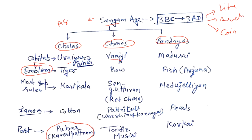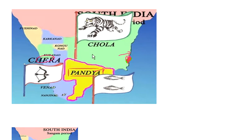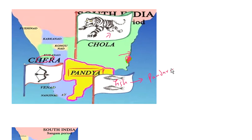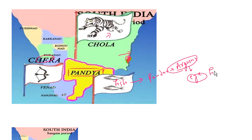Now let us look at their emblems. Looking at the map, Chola is represented by the tiger, so the emblem was the tiger. Pandya was represented by the fish, or you can say the carp. Chera was represented by the bow. To remember Pandya's emblem, think of the Pandavas in the Mahabharata — specifically Arjun, who hit the eye of a revolving fish — so Pandya's emblem was the fish.